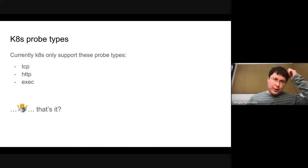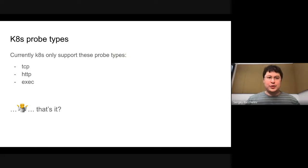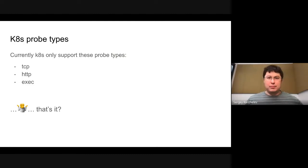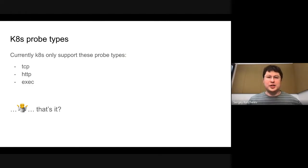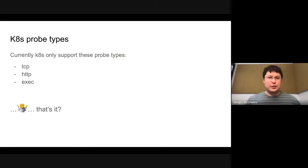What kinds of probes does Kubernetes support today? We support TCP probes, HTTP probes, and exec probes. TCP basically tries to open a port — if it can be opened, it's OK; if not, it fails. HTTP waits for a 200 response from an HTTP endpoint. Exec executes a binary you specify — if it returns 0, it's OK; if not 0, it's not OK. That's simplified a bit, but essentially it.